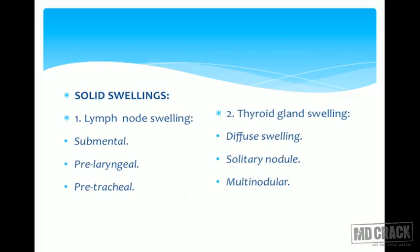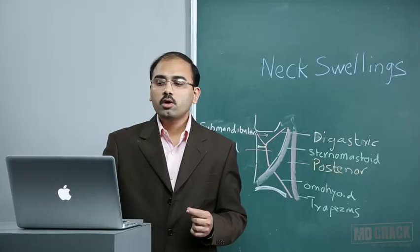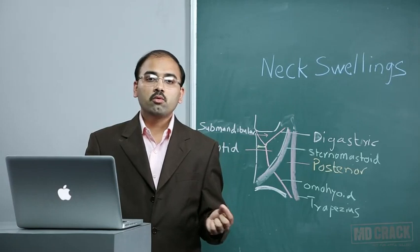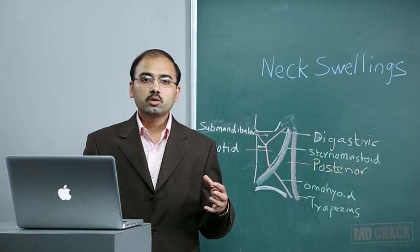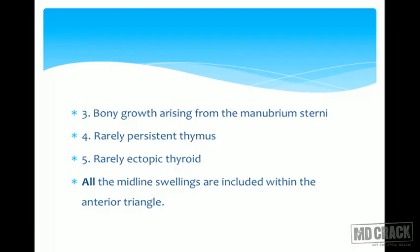The solid midline swellings include lymph node swellings from submental, prelaryngeal, and pretracheal lymph nodes. Next are thyroid gland swellings — diffuse swellings, solitary nodule, or multinodular goiter. Then bony growth arising from the manubrium sterni, and rarely a persistent thymus causing a midline swelling. Next is ectopic thyroid. All midline swellings are included within the anterior triangle.